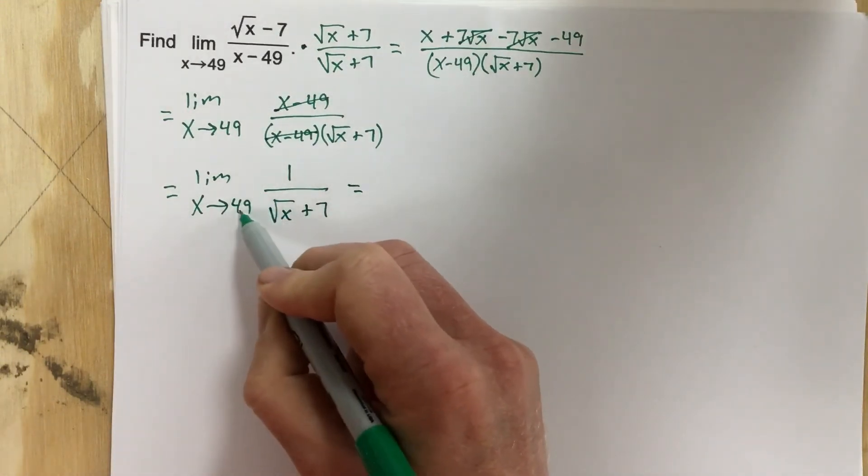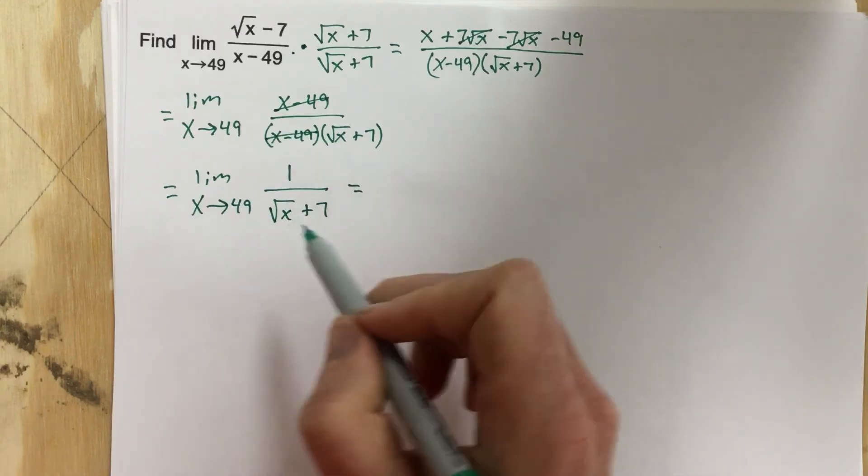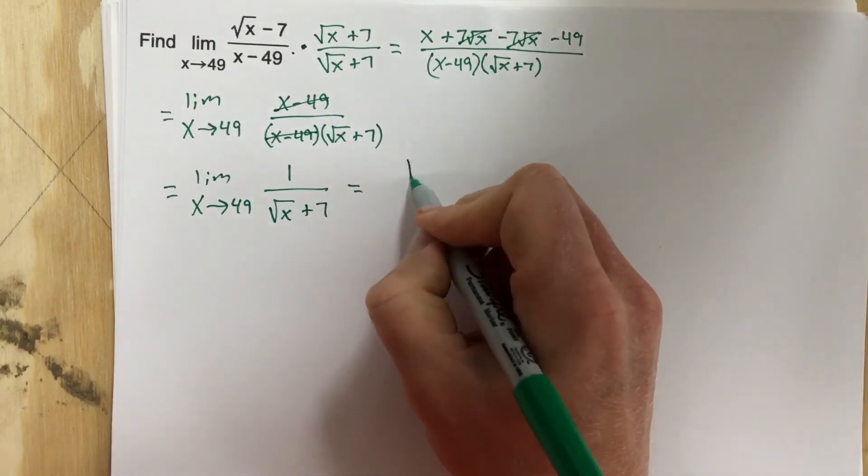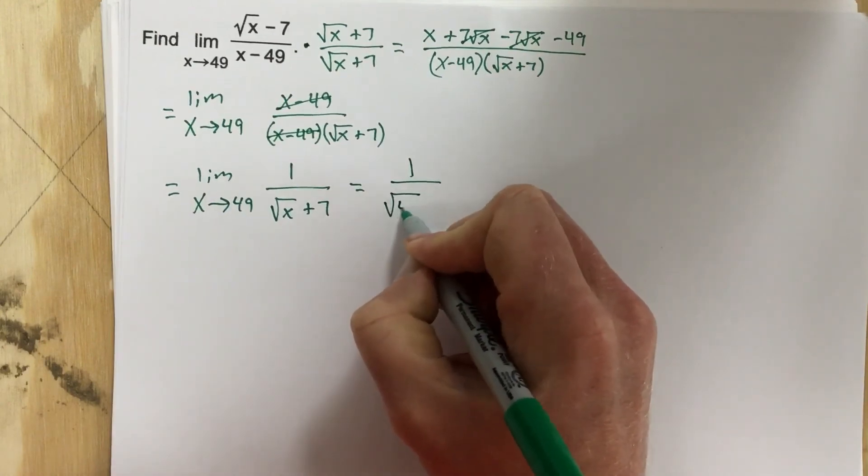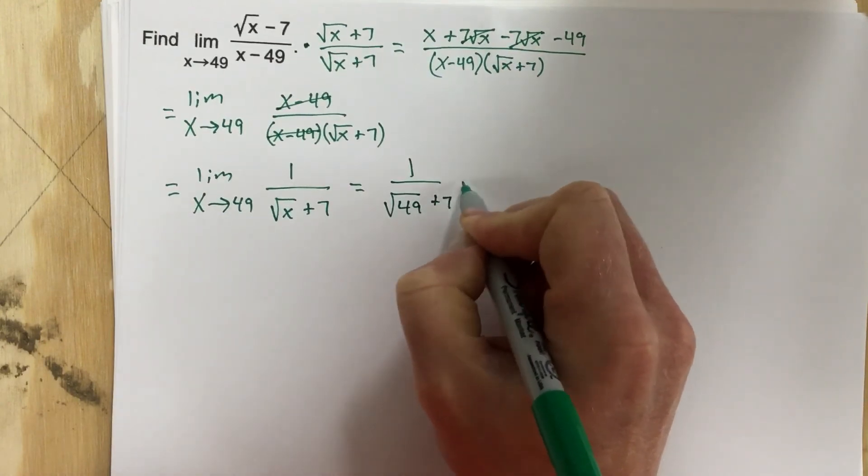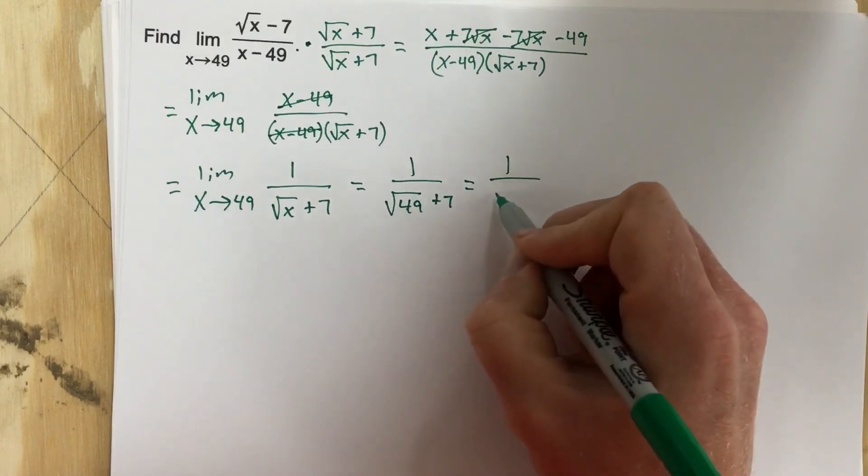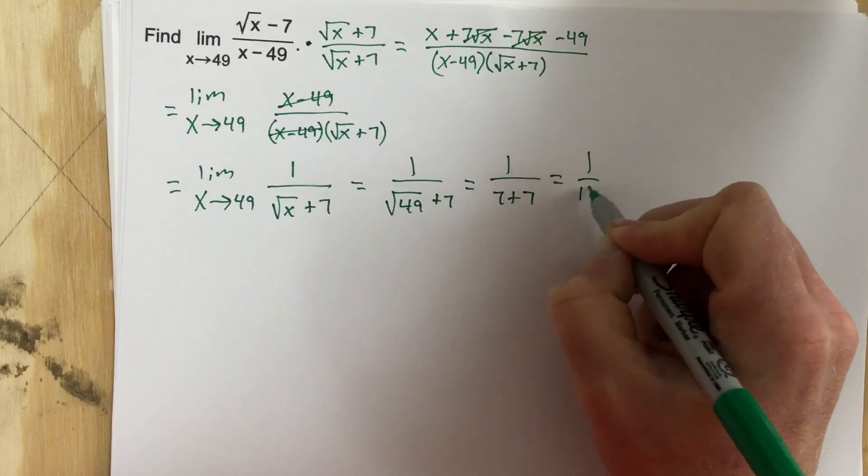I can now plug 49 in and check, can I actually plug it in and not get a 0 in the denominator? Let's see. That'll be 1 over root 49 plus 7. So I get 1 over 7, root 49 is 7 plus 7, which is 1 over 14.